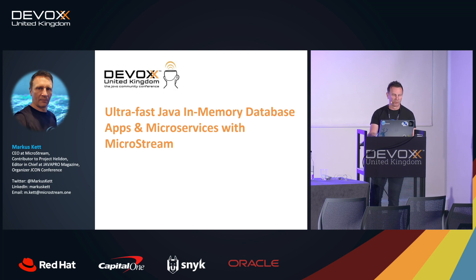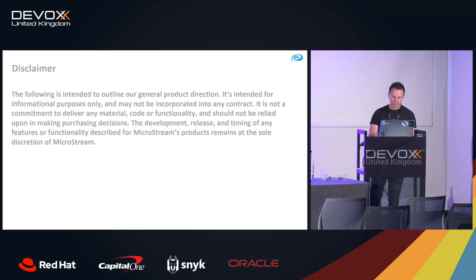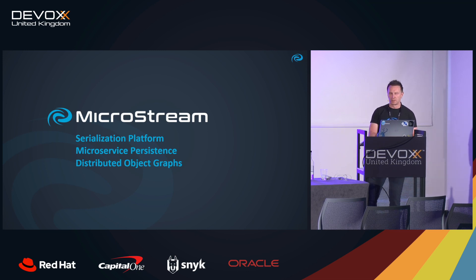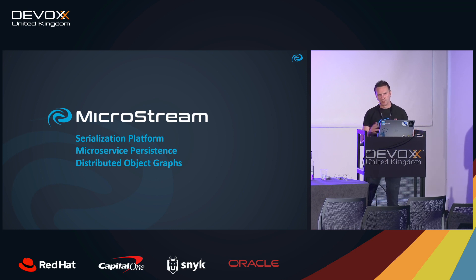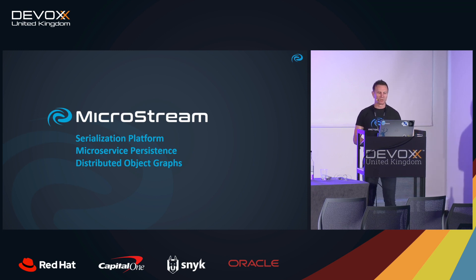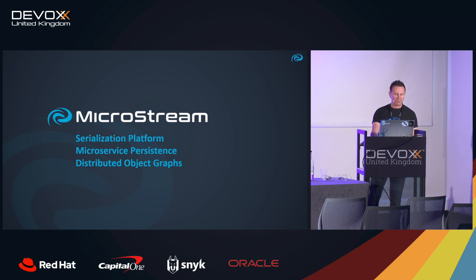MicroStream core is a serialization platform — serialization written from scratch that works fundamentally different from Java serialization. It's also a persistence library and persistence layer especially for microservices, fitting great because it's lightweight with no dependencies. We are currently working on distributed object graphs, like distributed caches similar to Redis, but we use real Java object graphs — that's the big difference.